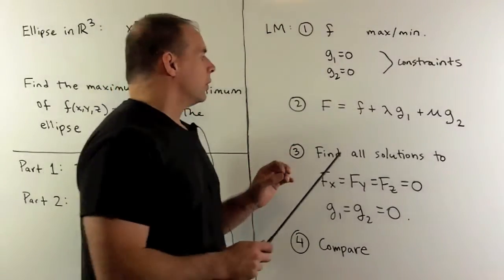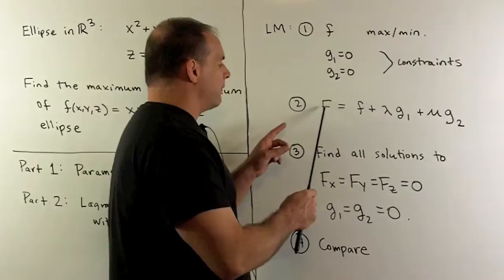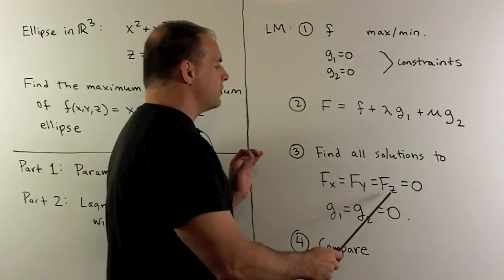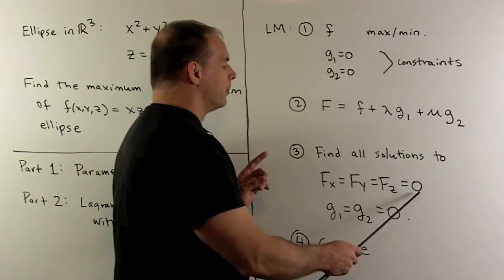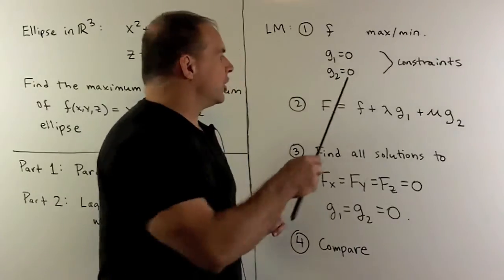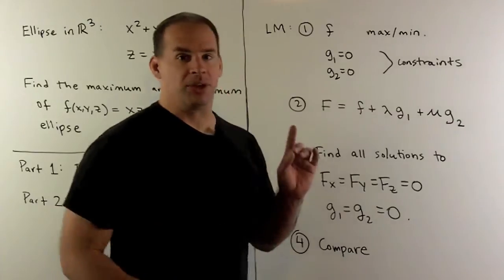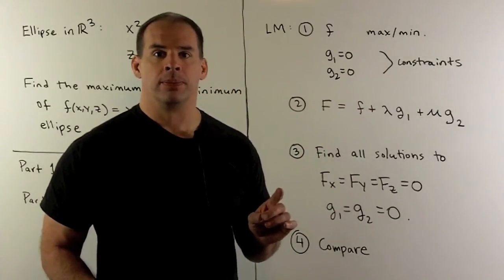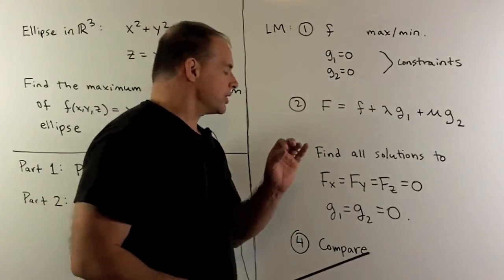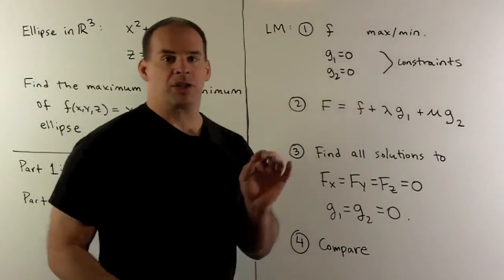Next step, we're going to take our function capital F, find its partial derivatives, and set them equal to zero. Take our constraint equations, and then we're going to find all solutions to these five equations simultaneously. Once we have those solutions, we compare to find our maximum and minimum.